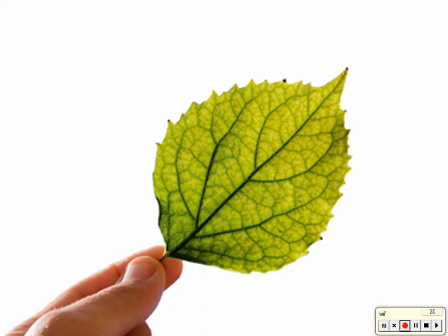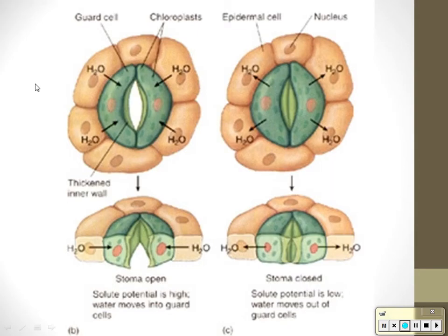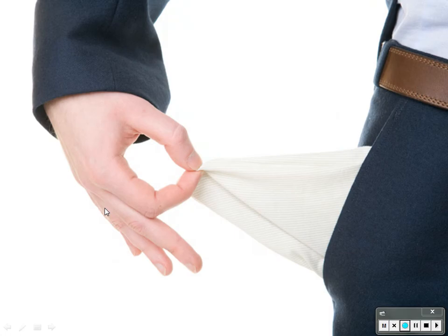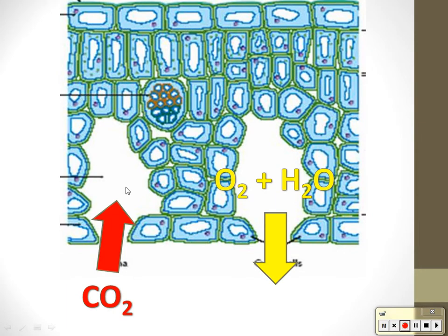CO2 gets into the leaf through holes in the bottom called stomata — individual ones called stoma. The stomata open and close based on how much water is in them, using active transport and energy from respiration. If there's a lot of water in the guard cells, they pop open and CO2 diffuses in. If water is removed from the guard cells, they shrink closed. While they are open, CO2 can get in, oxygen can get out, and water vapor can also get out — all by diffusion.